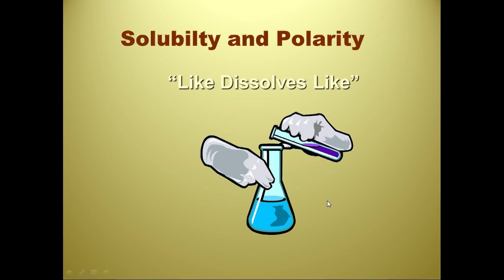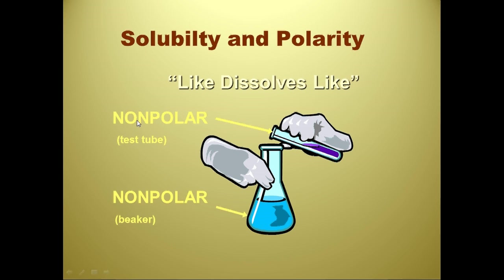When we talk about why things dissolve, we need to talk about polarity — so solubility and polarity. This simple three-word sentence explains absolutely everything: like dissolves like. Things that have charges dissolve things that have charges; things that don't have charges dissolve things that don't have charges. The two non-polar pieces of glassware are not being dissolved by the polar solutions contained within them — it would be a weird world if we made containers out of polar substances.